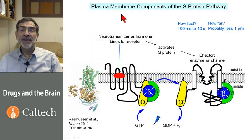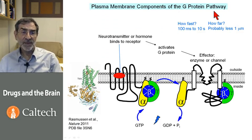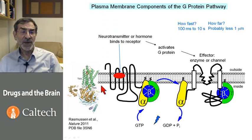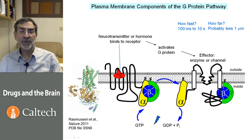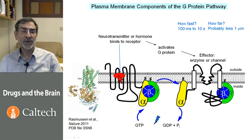The plasma membrane components of the G-protein pathway are described in this image. Here is a recent X-ray crystallographic structure that is a much more realistic version of the schema shown here. The neurotransmitter or hormone binds to the G-protein coupled receptor — here is the hormone schematized, and this bright color is the hormone in the real structure.